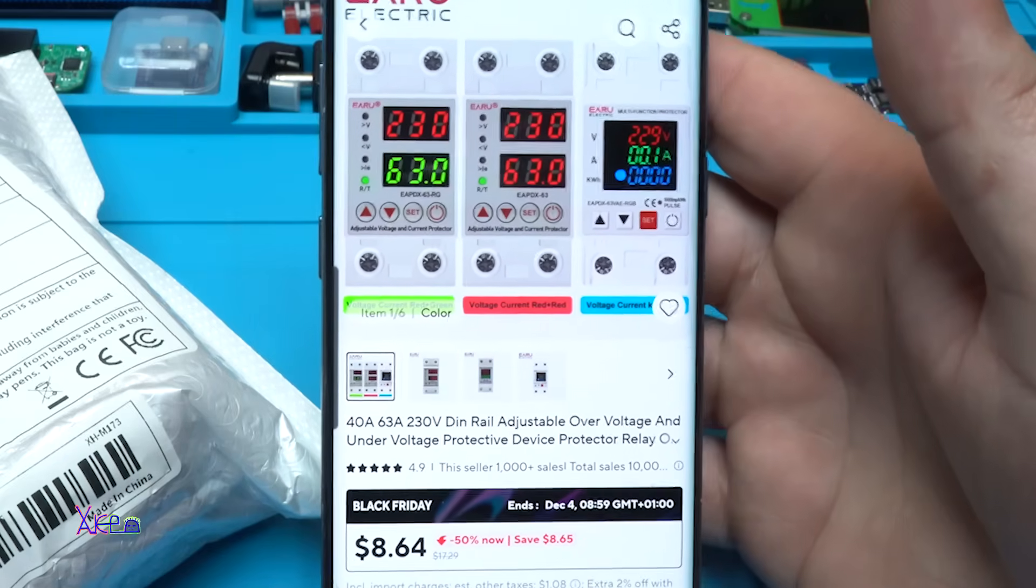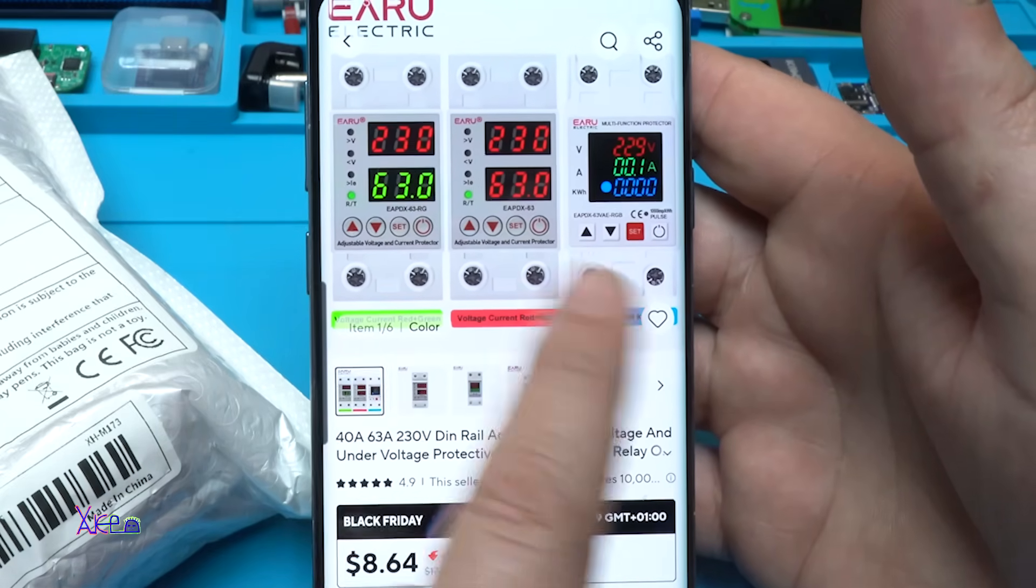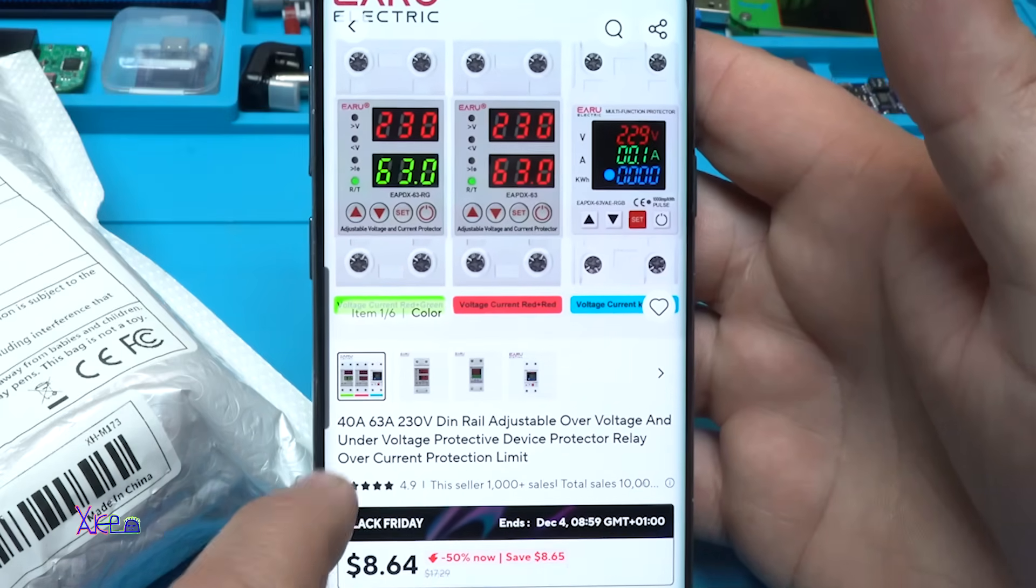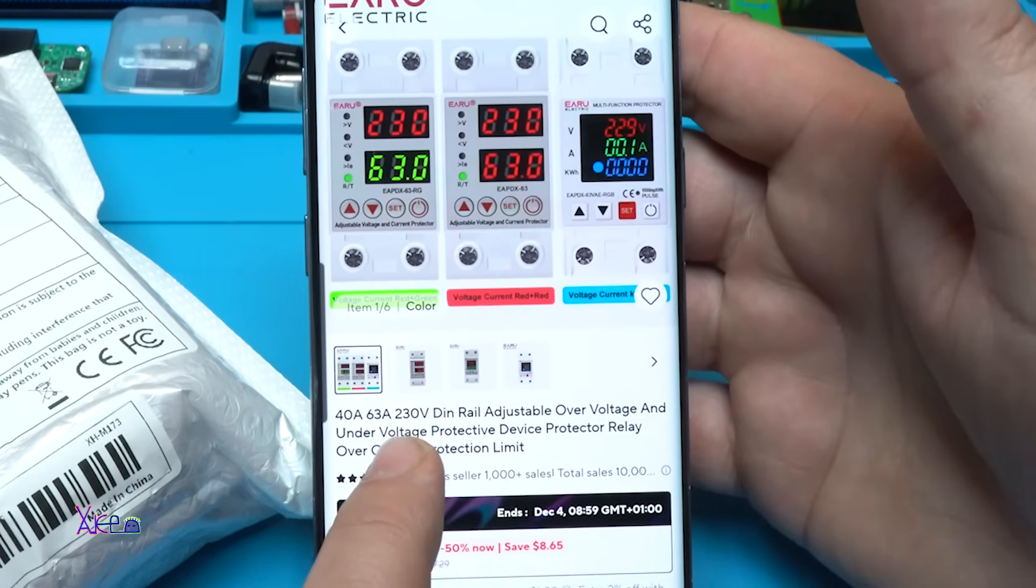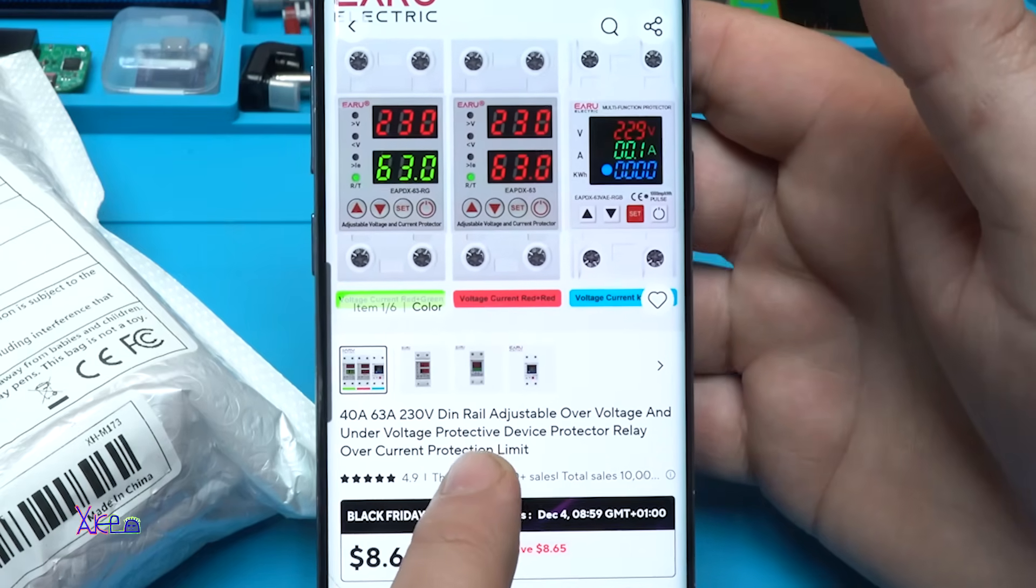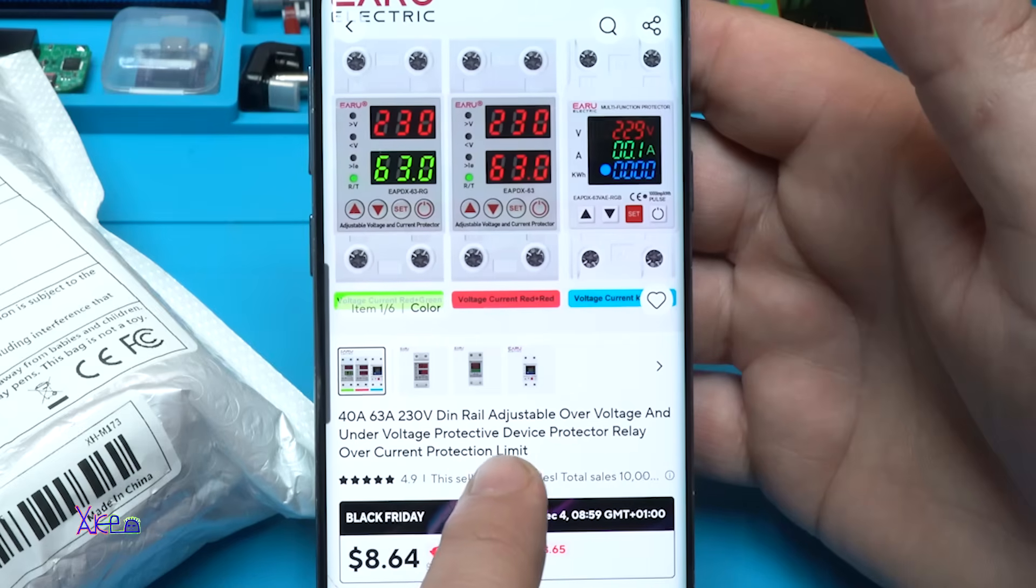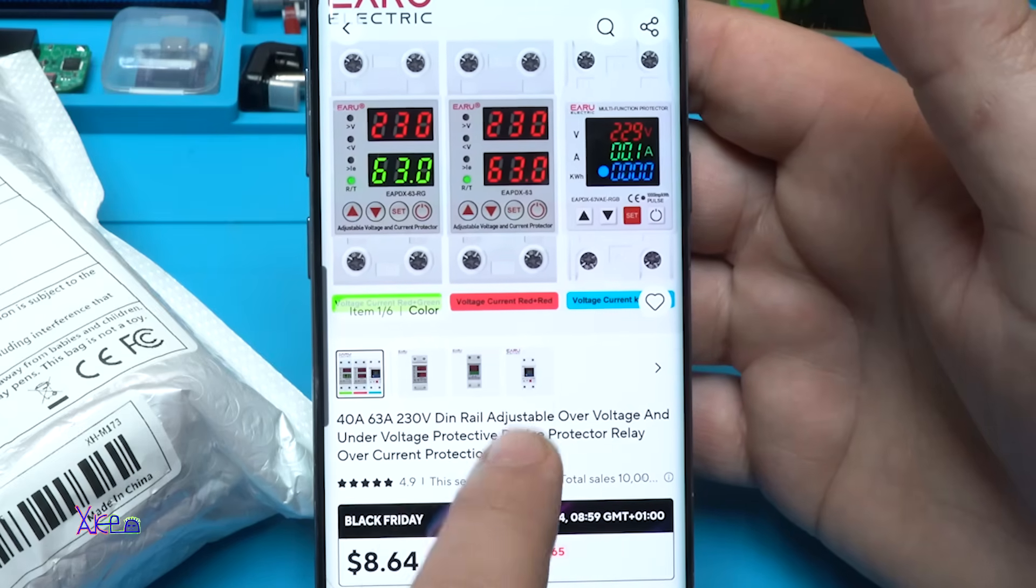The price starts from 8 US dollars and it's going up, depends on which model you're going to get. And what is it? You can choose 40 or 63 amperes from 110 volts to 230 volts, DIN rail adjustable over voltage and under voltage protective device with relay time over current protection limit.